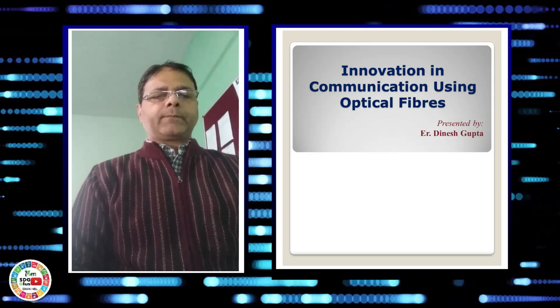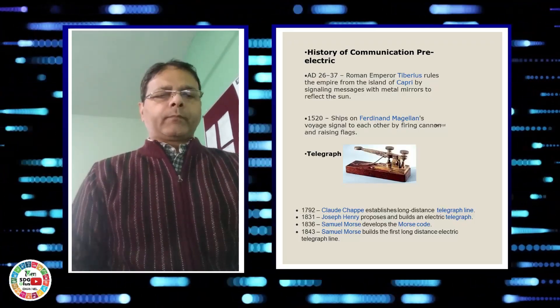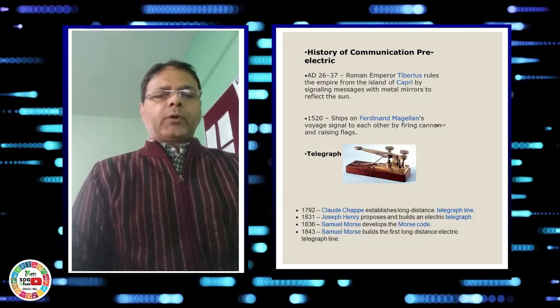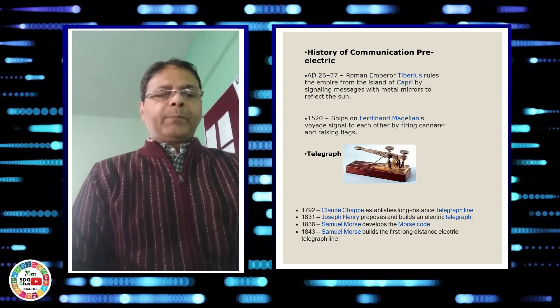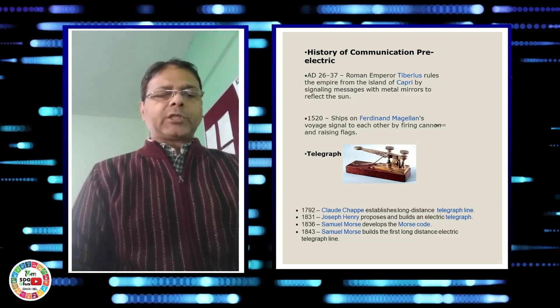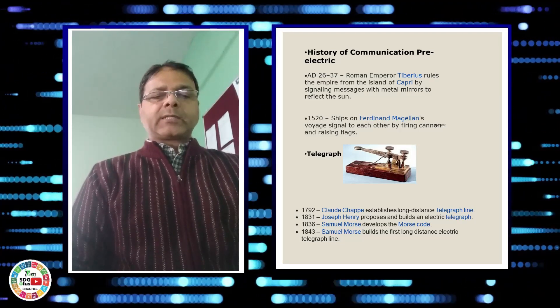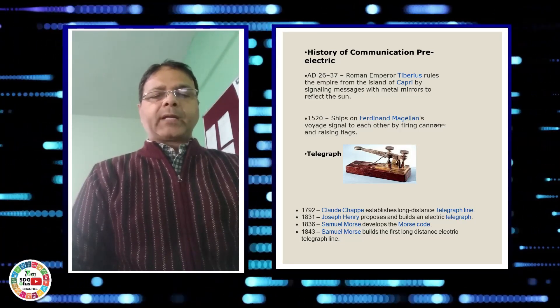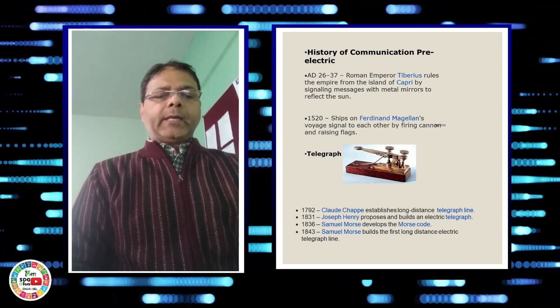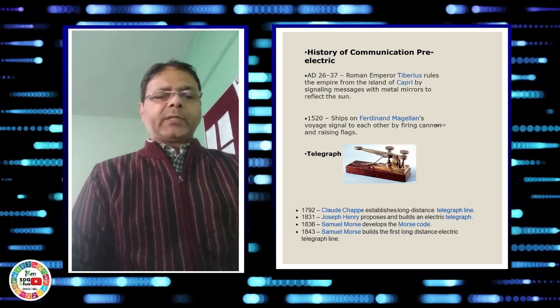The history of communication starts in the year 26 to 37 AD when Roman emperors communicated with each other by sending signaling messages by reflecting sun rays using metal mirrors. In the year 1520, ships in the sea used to communicate with each other by firing cannons and raising flags.